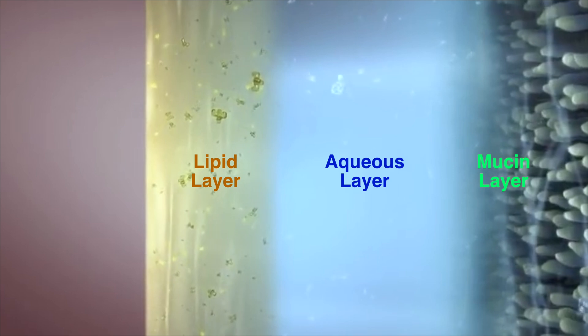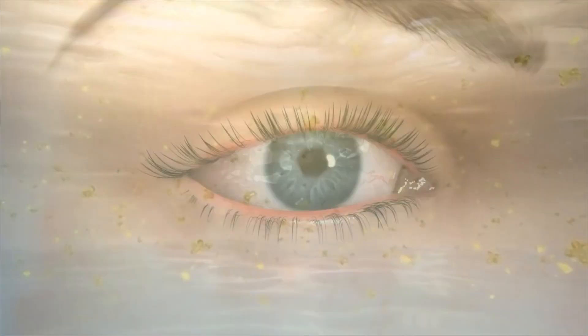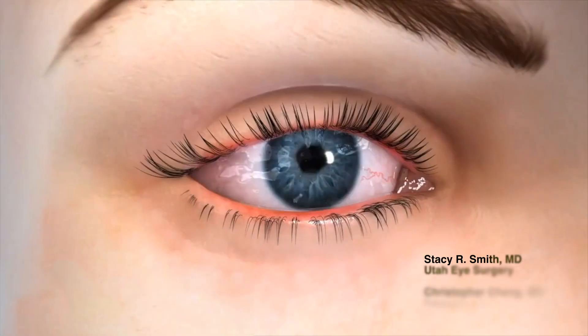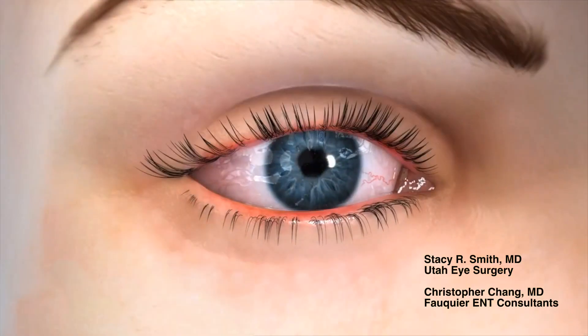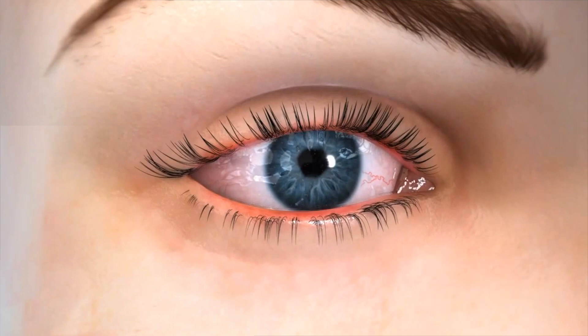And finally, the innermost mucin layer. All three layers need to be present and healthy in order to prevent dry eyes. Other tests are required to evaluate the lipid and mucin layers of the tear film. See your ophthalmologist for dry eye evaluation and testing.